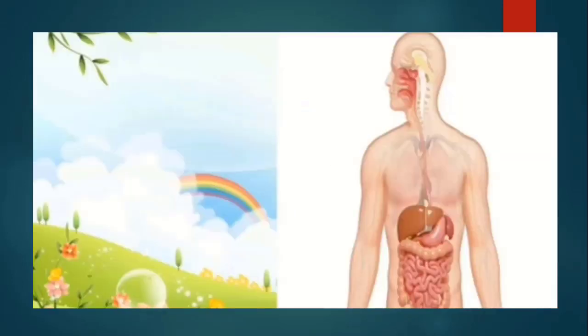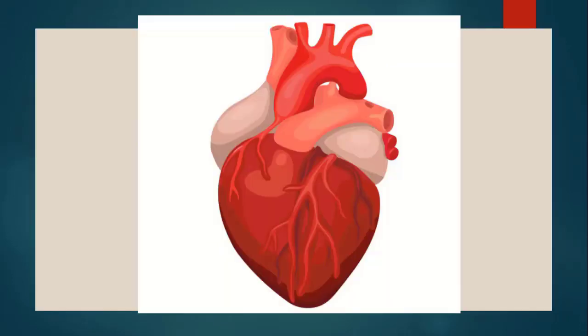Aap ko pata hai ke kuch parts humearee jism ke anndar bhi hotte hai. There are so many parts inside our body. These parts are called organs. These organs humearee zindha rhenne gil yeh bohot zaroori aur hume hai and we cannot live without these.